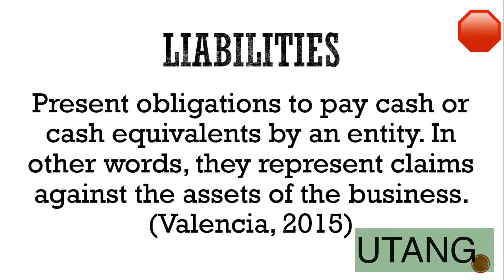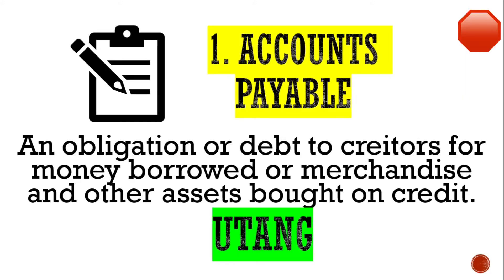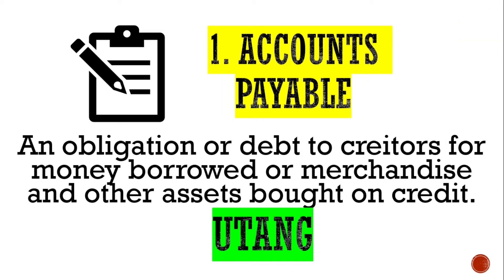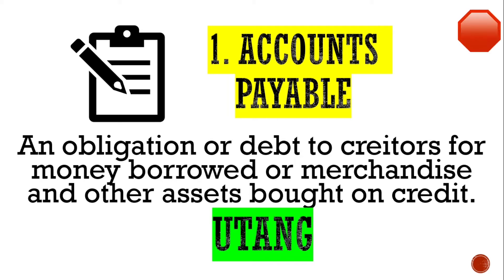So iisa-isahin natin sila. Accounts payable — an obligation or debt to creditors for money borrowed or merchandise and other assets bought on credit. Ito yung generic na account title. Basta meron tayong makita sa mga transactions na on account o on credit, pero walang specified kung ano klaseng utang siya, ang gagamitin nating account title ay accounts payable. Ito rin yung kabaliktaran ng accounts receivable — tayo naman yung may pagkaka-utang sa ating mga creditors.